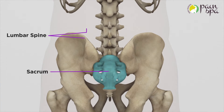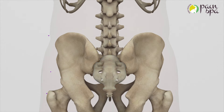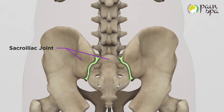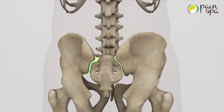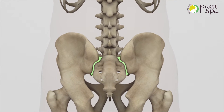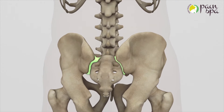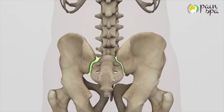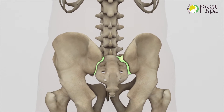The sacrum is a triangular bone lying between the low back above and the tailbone below. Sacroiliac joints connect the sacrum to the pelvis and are held together in place by dense ligaments. Sacroiliac joints act as shock absorbers for the pelvis and the lower back and typically move only a small amount.